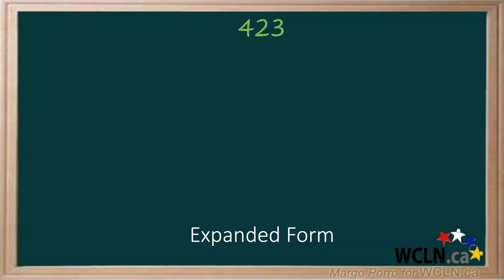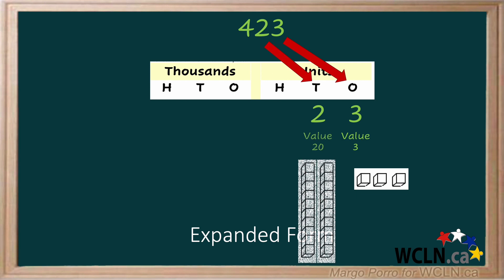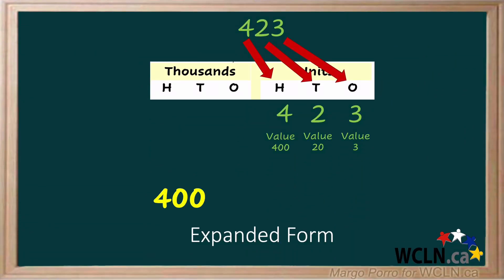Let's start with 423. First, think about the place value and actual value of each digit. The 3 is in the ones place and has a value of 3. The 2 is in the tens place — two tens has a value of 20. The 4 is in the hundreds place and has a value of 400. To write in expanded form, we put the values together from largest to smallest in an addition equation: 400 plus 20 plus 3.